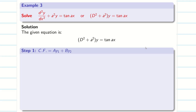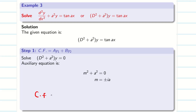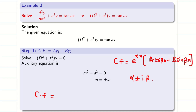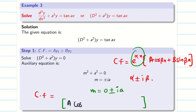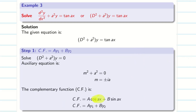Step 1: find the complementary function. Make the right hand side zero; the auxiliary equation is m squared plus a squared equal to zero, giving m equal to plus or minus ia. For imaginary roots of the form alpha plus or minus i·beta, the CF is e^(alpha·x) times (A cos(beta·x) + B sin(beta·x)). Here alpha is zero, so CF is A cos(ax) + B sin(ax). Thus y1 = cos(ax) and y2 = sin(ax).